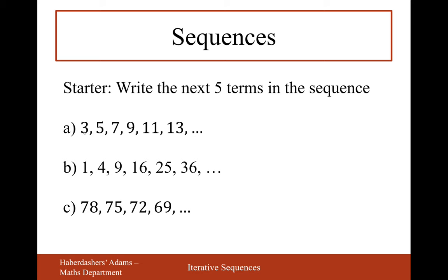Hopefully you've done that. In the first sequence, you spotted the pattern - there's always a pattern between the numbers in a sequence. The pattern this time is add 2. So the next five terms will be 15, 17, 19, 21, and 23. That'll be the answer to part A.